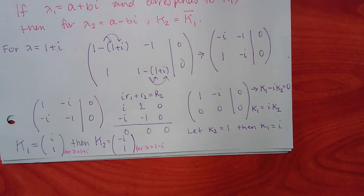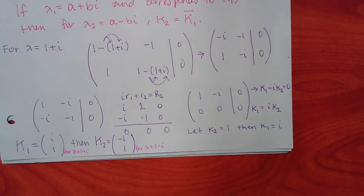On the test, you'll specify which K goes with which lambda. K1 = [i, 1] corresponds to lambda equal to 1 plus i, and K2 = [negative i, 1] corresponds to lambda equal to 1 minus i. The test format already shows you how to present the answer.